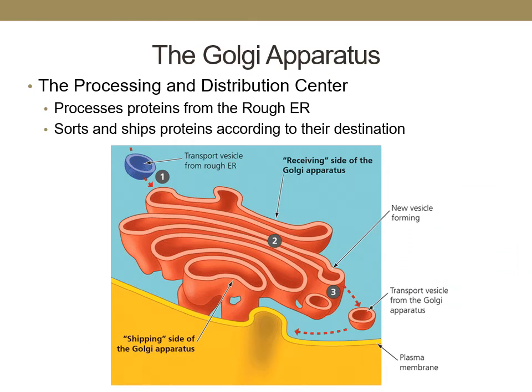When the protein reaches the Golgi apparatus, also known as the processing and distribution center, the proteins are processed into their final, fully functional version. The finished proteins are sorted and again packaged into transport vesicles made of the membrane of the Golgi apparatus and sent to their final destination — in this case, outside of the cell.